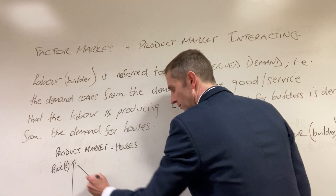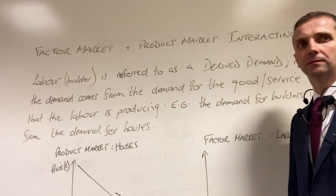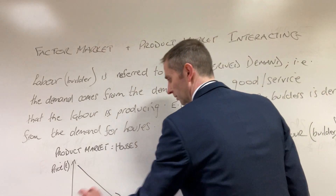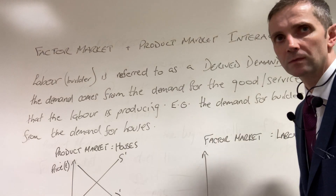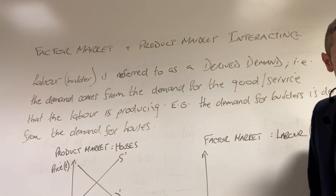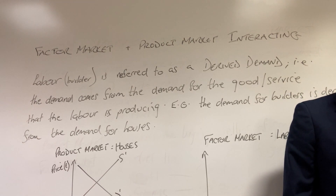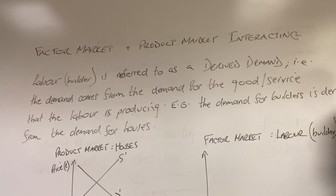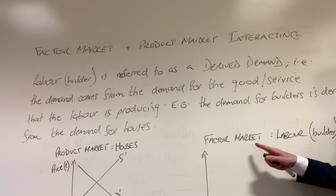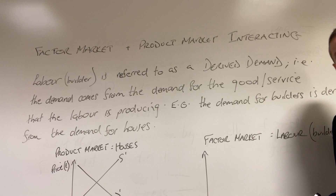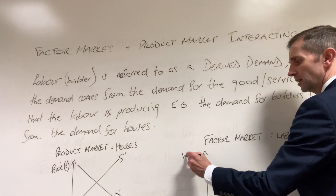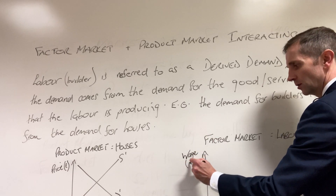And then you're going to draw your demand curve, like so. And your supply curve, like so. So, S1, D1. Is that okay, Nimra? Yeah. No, it's the factor market — the builder, they don't have a price, they get a — right, so we're talking the wage on this one, not price. Pound sign.